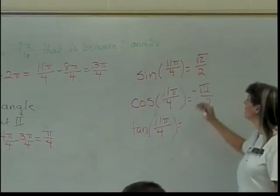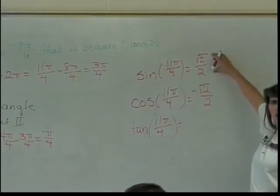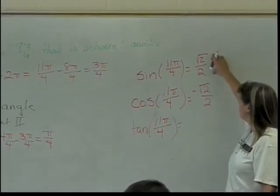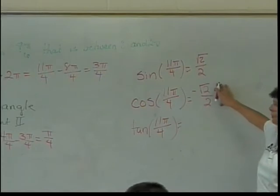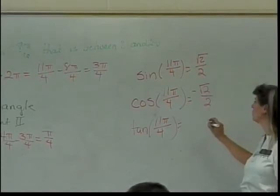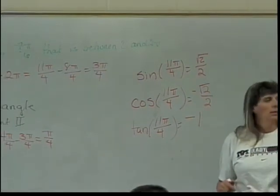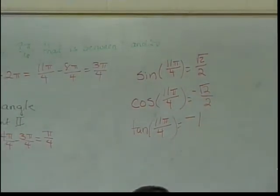What's the tangent? Well, remember, tangent is the sine of the angle divided by the cosine of the angle. So, it would be square root of 2 over 2 divided by the negative square root of 2 over 2, so that would give me negative 1. And, do I have any more?